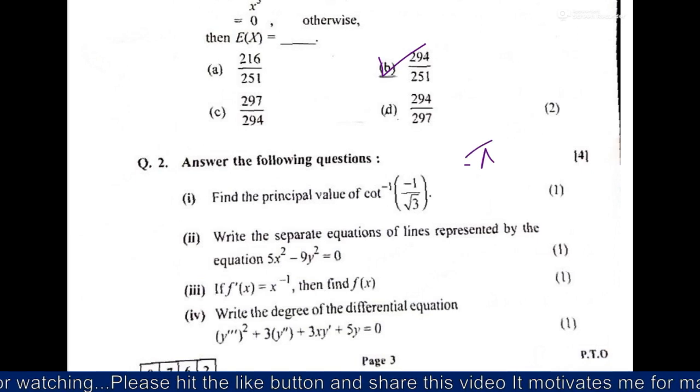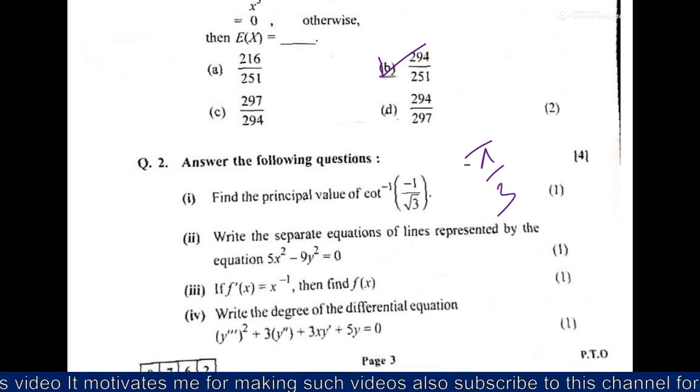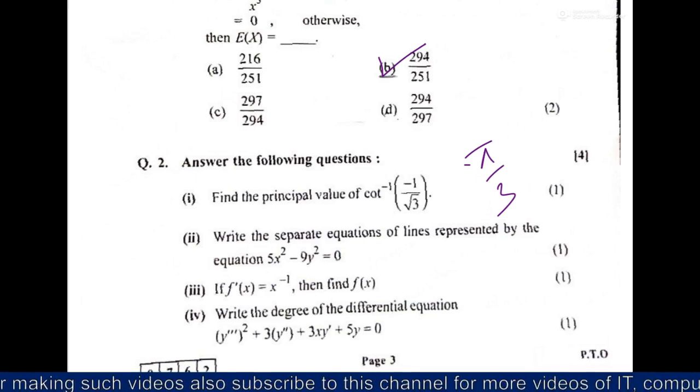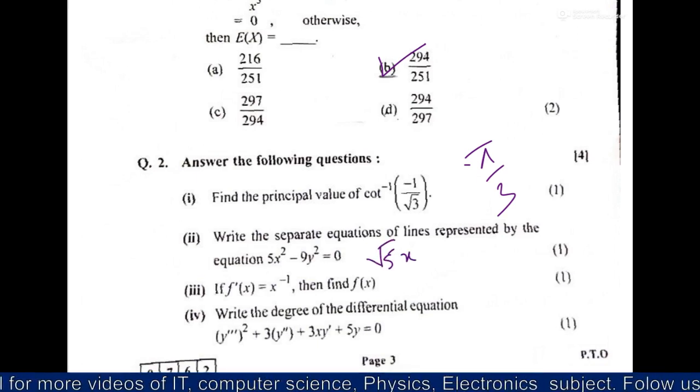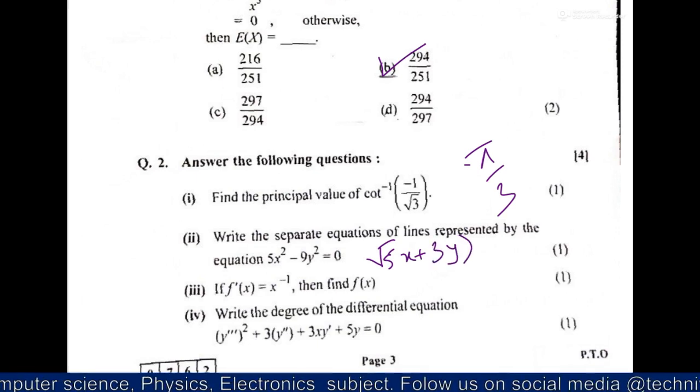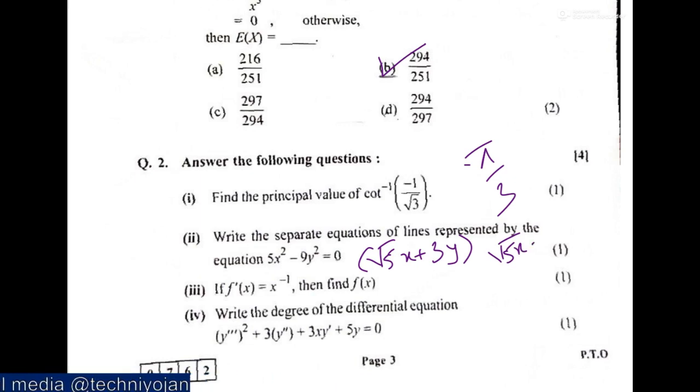Then we'll move forward to answer the following questions, right. For the first, its answer is minus pi by 3. Then of second, the two separate equations are 5x plus 3y, then root of 5x minus 3y, right, and say is equal to 0. So these are the separate equations.